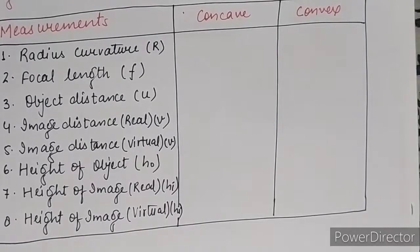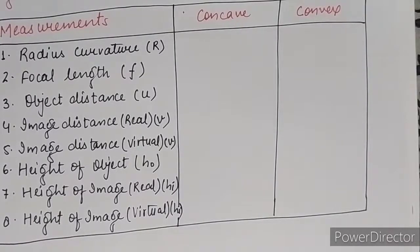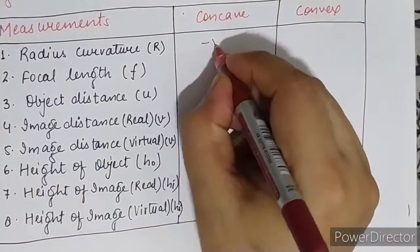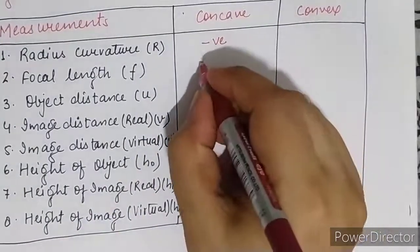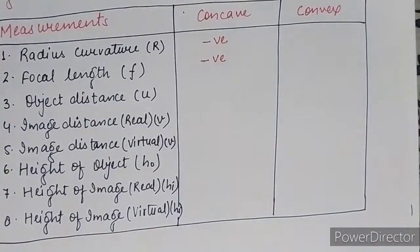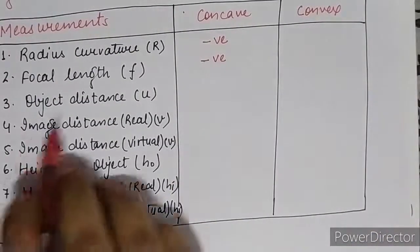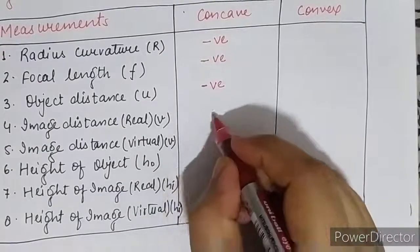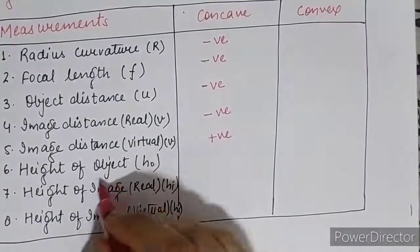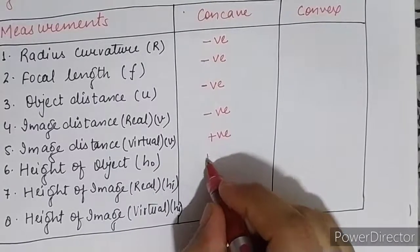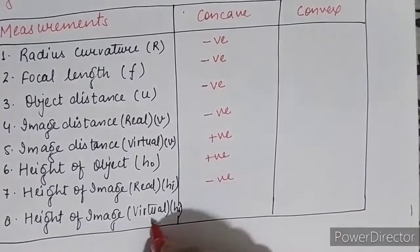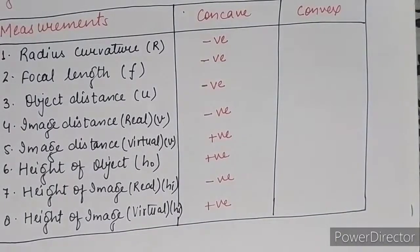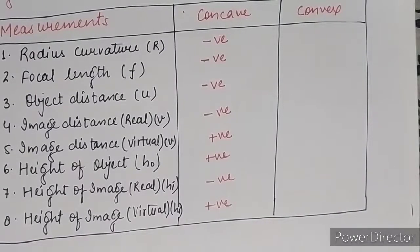To summarize for the concave mirror: radius of curvature is negative, focal length is negative. Object distance is always negative for both concave and convex mirrors. Image distance for real is negative, virtual is positive. Height of object is always positive. Height of real image is negative (inverted), and height of virtual image is positive (erect).